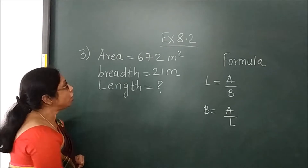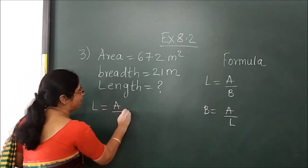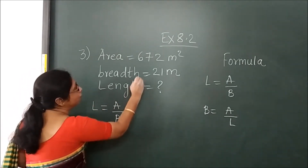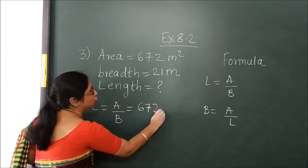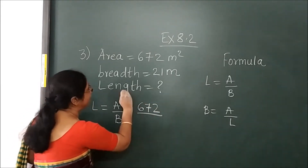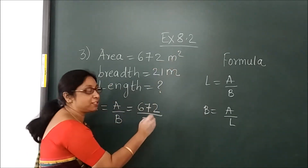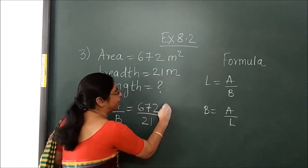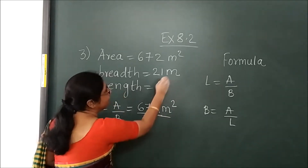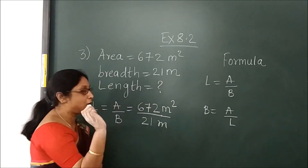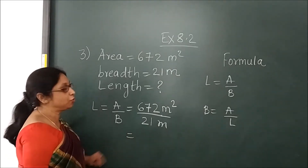Now length — you will write the formula: area upon breadth. Area is given as 672. You will write meter squared. And breadth is given, so you will write meter once. Now you will carry out the division.